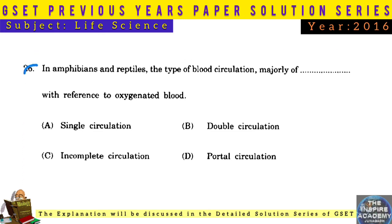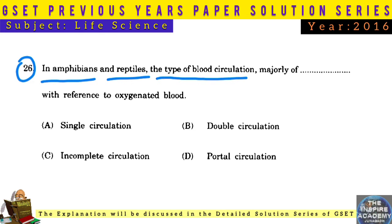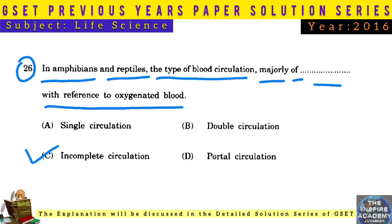Question No. 26: In amphibians and reptiles, the type of blood circulation, with reference to oxygenated blood, is incomplete circulation.